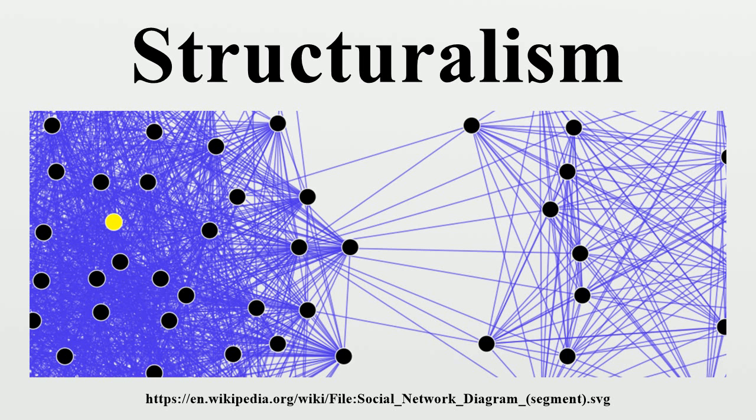In a later development, feminist theorist Alison Assiter enumerated four ideas that she says are common to the various forms of structuralism. First, that a structure determines the position of each element of a whole. Second, that every system has a structure. Third, structural laws deal with coexistence rather than change. Fourth, structures are the real things that lie beneath the surface or the appearance of meaning.